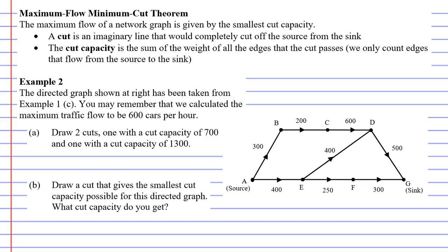So we have example two here. Now this example is exactly the same as example one which we solved in the previous video. So we already know that the maximum traffic flow from A to G is 600 cars per hour. But we're going to solve this using a different method. And the method we're going to use is called the maximum flow minimum cut theorem.